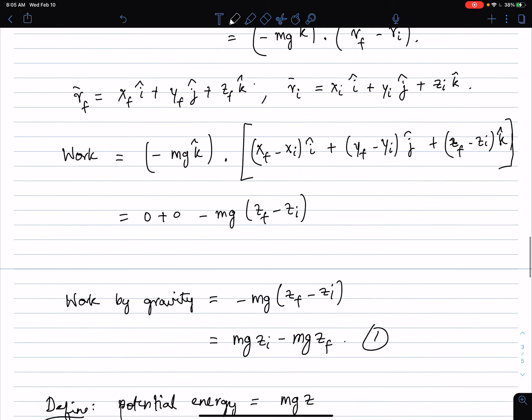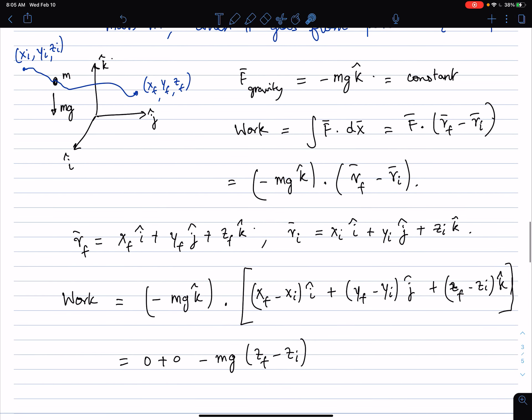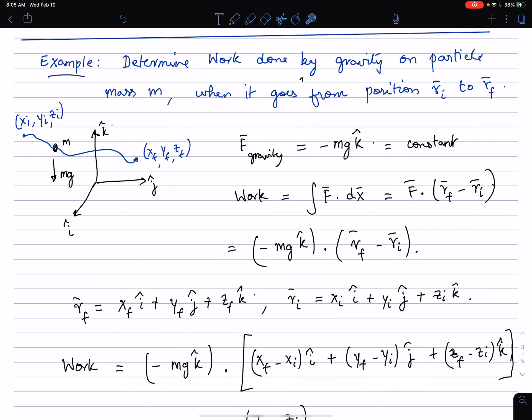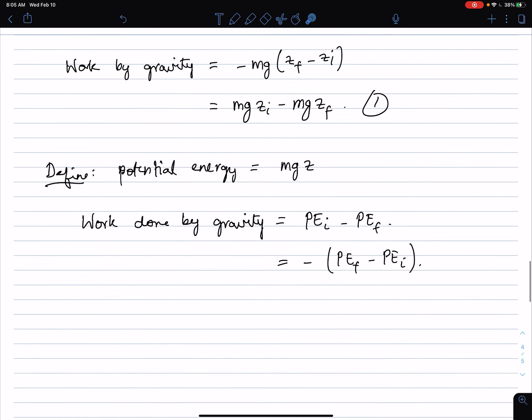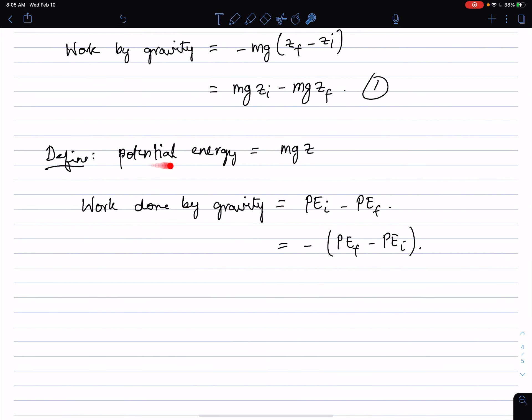So what did we just do? We computed the work done by gravity. We found that it was equal to this expression, mg z initial minus mg z final, and then defined this quantity called potential energy for gravity, and then rewrote the work done by gravity in terms of this potential energy.